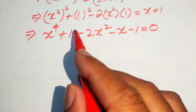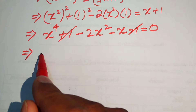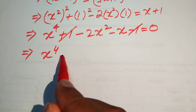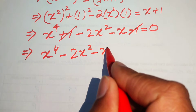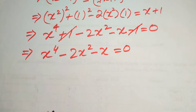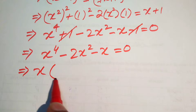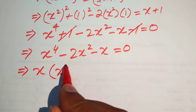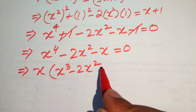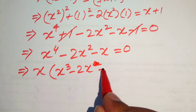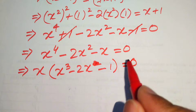The plus 1 and negative 1 cancel each other, and we get x to the power of 4 minus 2x squared minus x equals 0. We then take x as common from all terms, leaving the remaining terms as x cubed minus 2x squared minus 2x minus 1 equals 0.